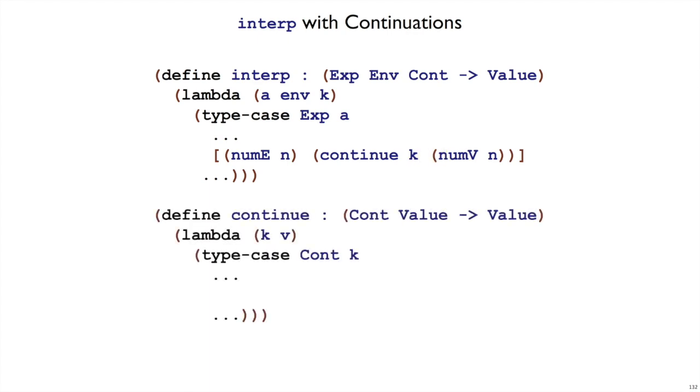Let's look inside of the continuation, the continue function. It takes a continuation and a value, and then it does the rest of the computation so it eventually produces a value. Let's suppose that that record is done k. If our whole program to evaluate was just the number 5, then we would create the numv5 here. Our continuation would be done k, no work to do, and so we would land at this case and we would just return the numv5.